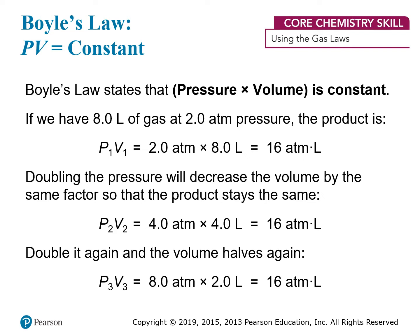Suppose you have 8 liters of a gas at 2 atmospheres of pressure, at some temperature with some number of gas particles. We just know that those will be constant for all the changes we're talking about here. So 8 liters of gas at 2 atmospheres of pressure — take the pressure, 2 atmospheres, multiply it by the volume, 8 liters, and you get 16. The unit here is atmosphere-liters, which is a bit unusual, but that is the unit.